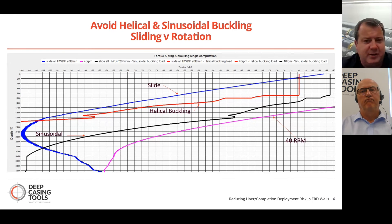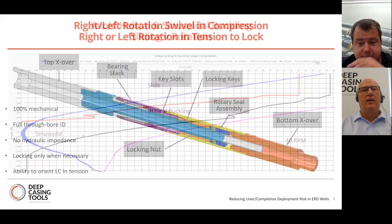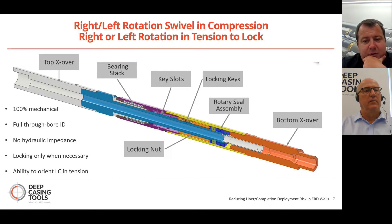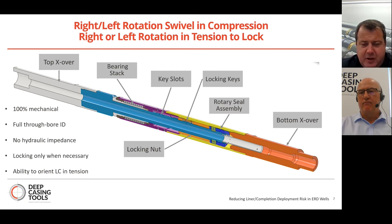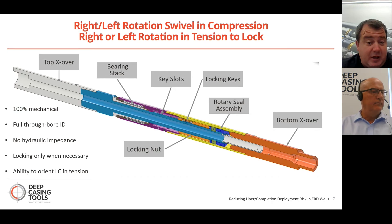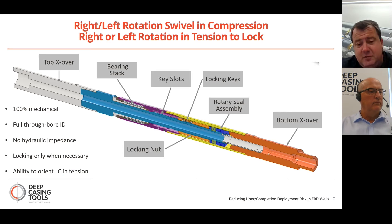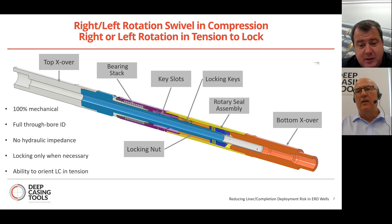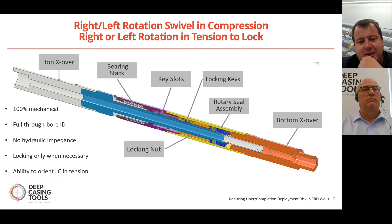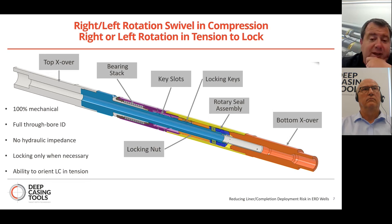These are two huge concerns for completion and drilling engineers when deploying a lower completion or liner. Looking at the MechLock cutaway — unlike competitor technologies, this is a 100% mechanical design with a straight bore ID of 2.6 inches, accommodating all the packer hanger setting balls available in the market for standard size completions. It's one less hydraulic window to worry about. When you're in compression, you can swivel left or right without transmitting torque to the lower assembly. You will be in compression because you won't have available weight on the hook.